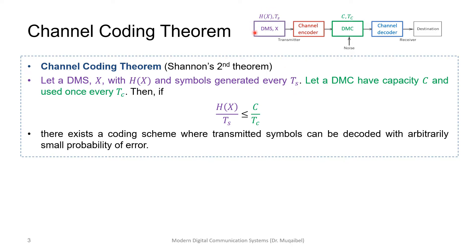This is the source side. We have a channel, a discrete memoryless channel (DMC). Notice the difference: we have DMS here (discrete memoryless source) and DMC (discrete memoryless channel). The properties of the channel are represented by its capacity, C, and it is used every T_c.